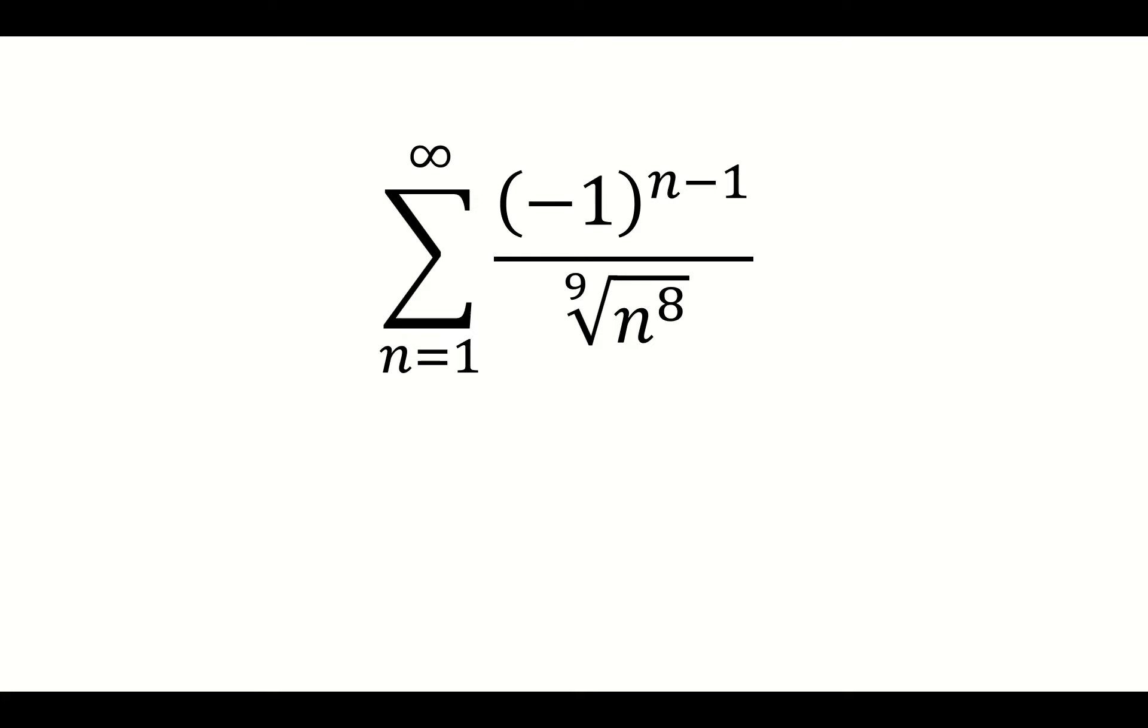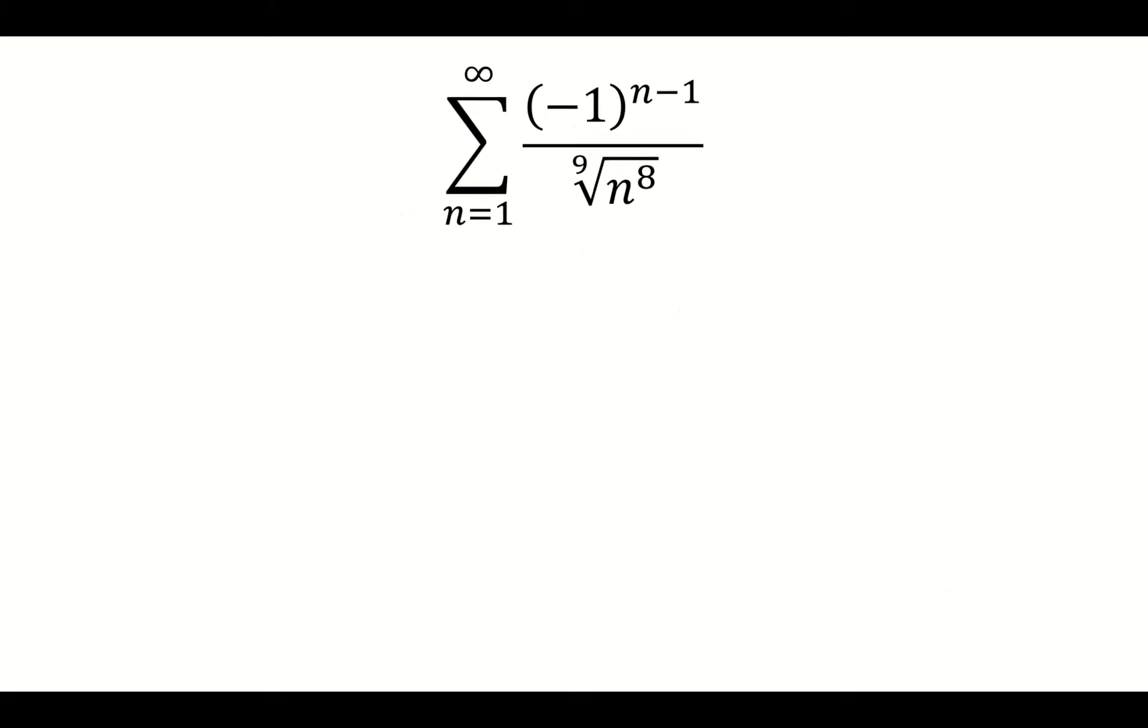The sum from n equals 1 to infinity, negative 1 to the n minus 1st power over the 9th root of n to the 8th. We want to see if this series converges absolutely, conditionally, or diverges.